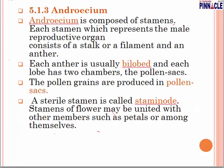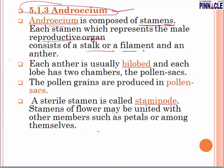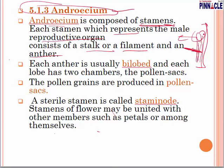Now let us discuss the male part — the reproductive organ of the flower. Androecium is composed of stamens, which represent the male reproductive organ. A stamen consists of a filament and an anther. The entire part is called a stamen. In the anther there are pollen grains. Each anther typically has two lobes and each lobe has two chambers called pollen sacs, which produce pollen grains.